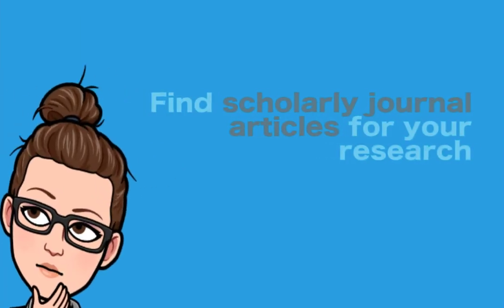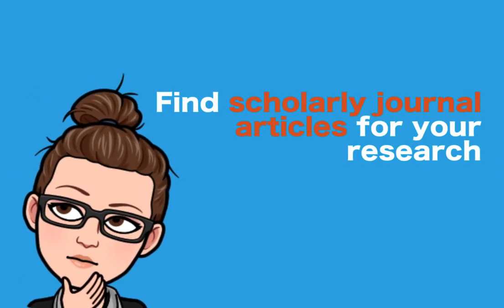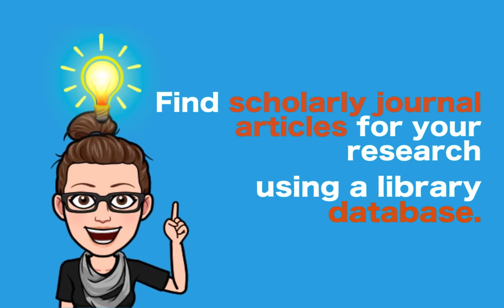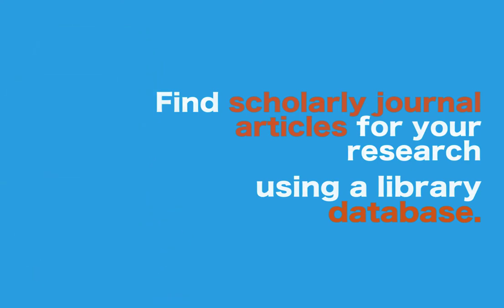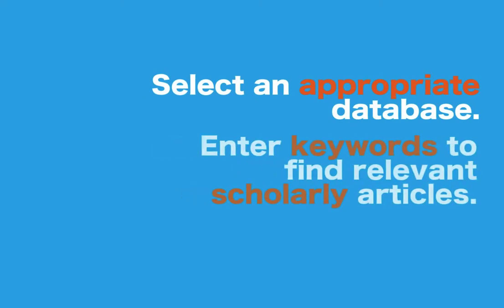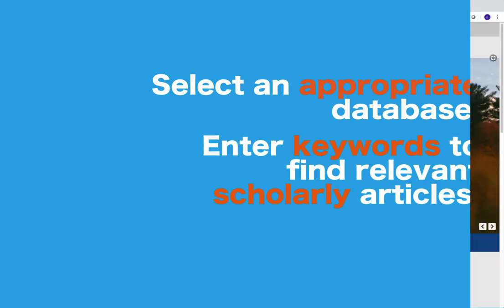So you need to find some scholarly journal articles for your research. Library databases are a great tool to use to search for reliable information on your topic. At Jenks we have over a hundred different databases you can choose from to search. This video will teach you how to select the appropriate databases and how to enter your keywords using various search tricks in order to find relevant articles on your topic.